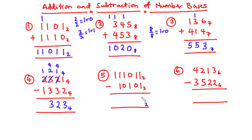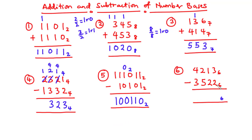For example 5, we are working in base 2. 1 minus 1 is 0; 1 minus 0 is 1. Then 0 minus 1 is not possible, so we borrow from the next digit — it becomes 0 and we borrow 2. Then 2 minus 1 is 1; 0 minus 0 is 0; 1 minus 1 is 0; and 1 minus 0 is 1. The answer is 100110 base 2.